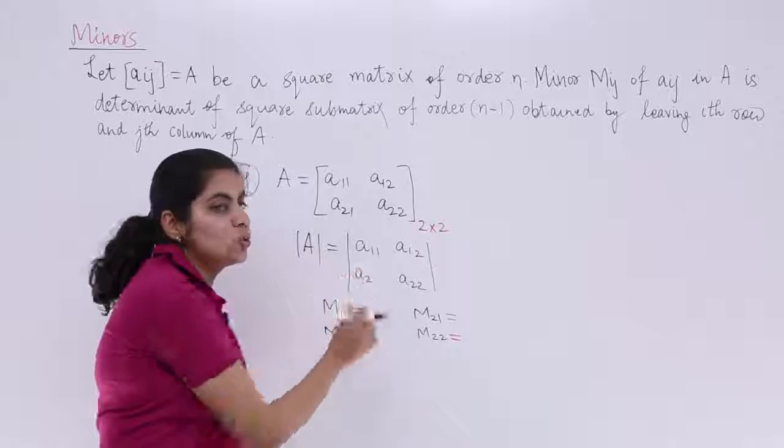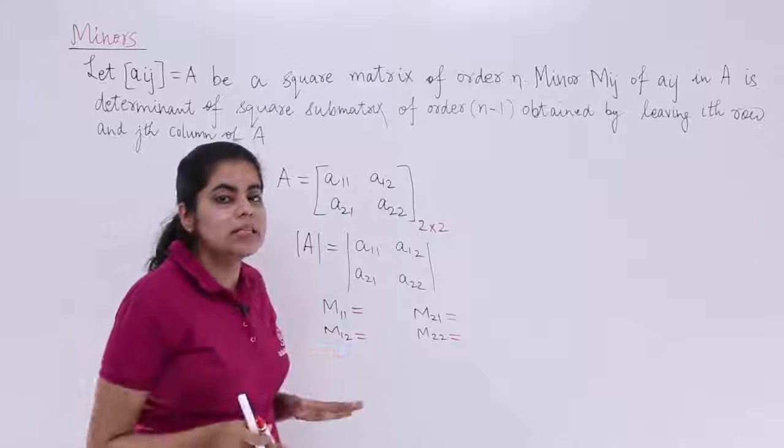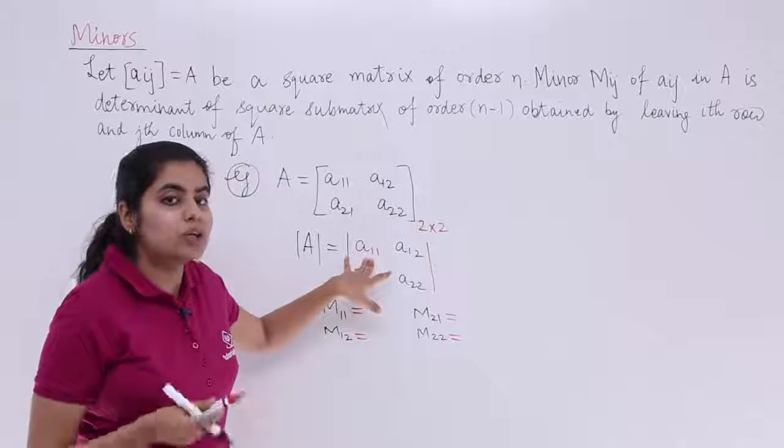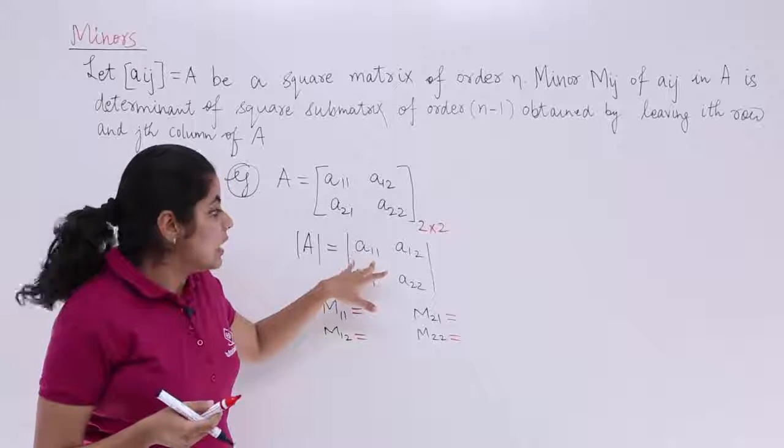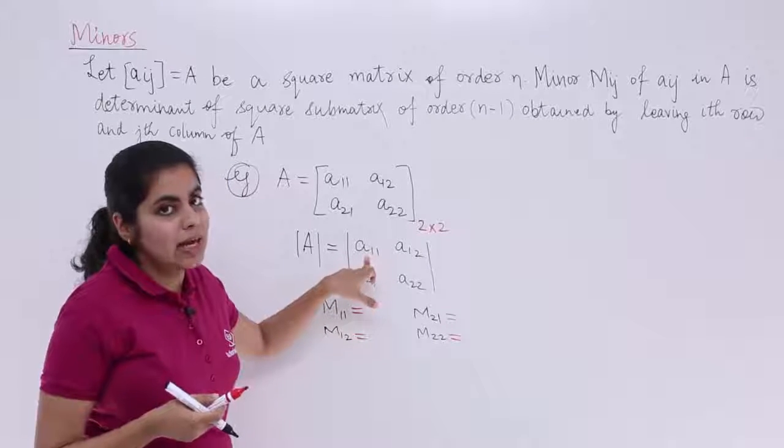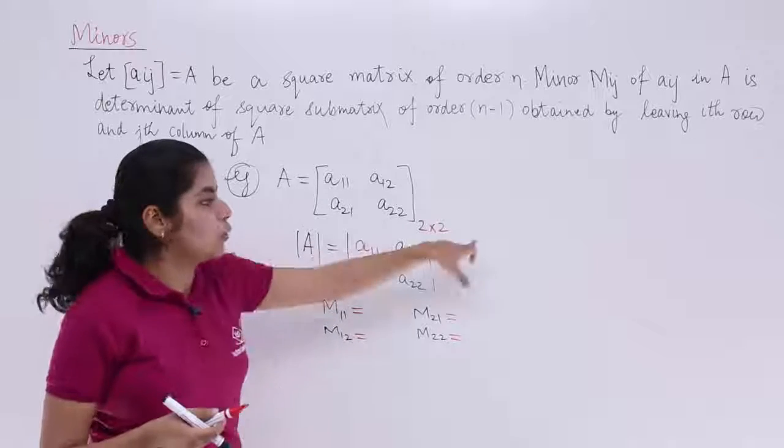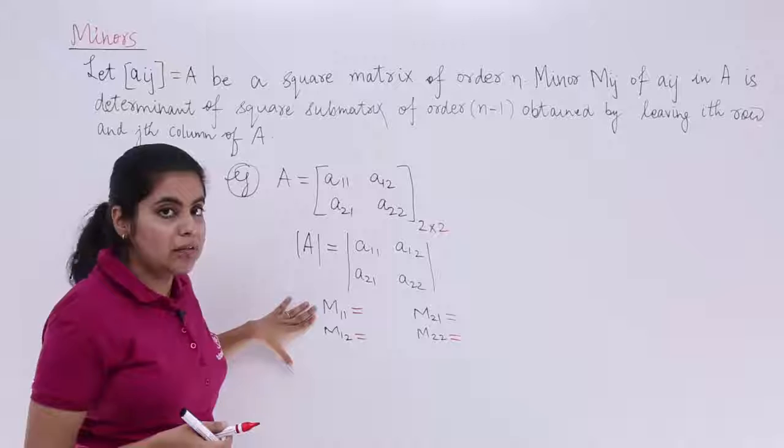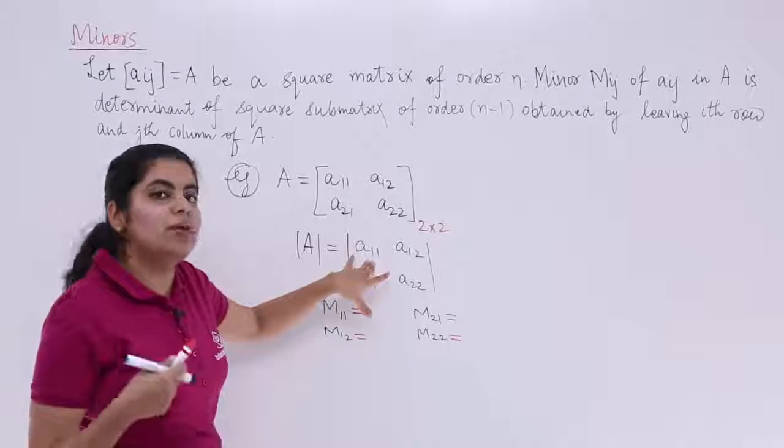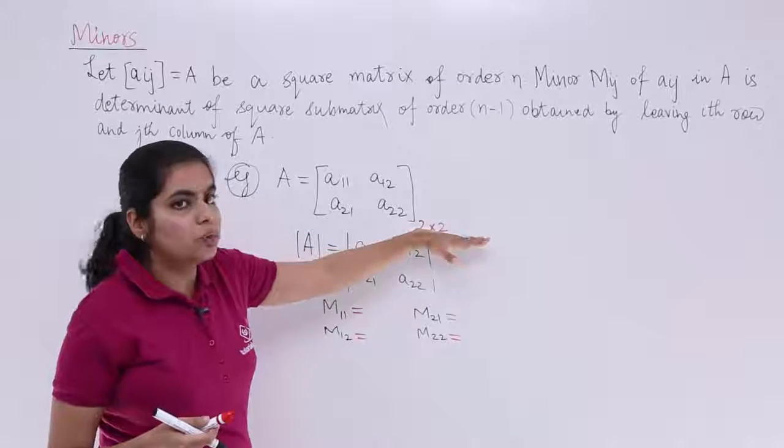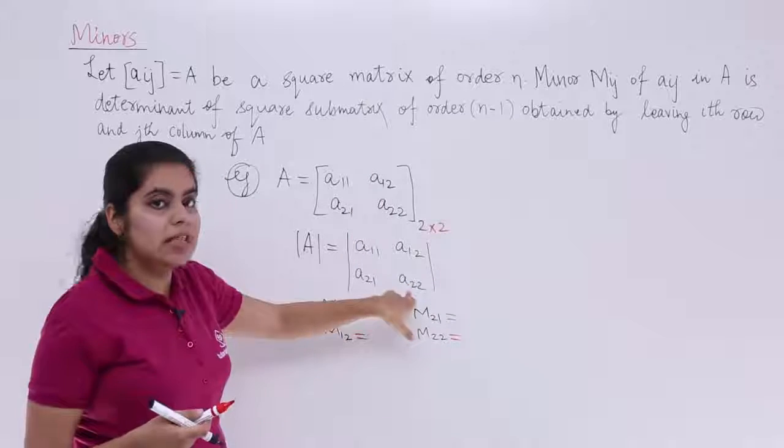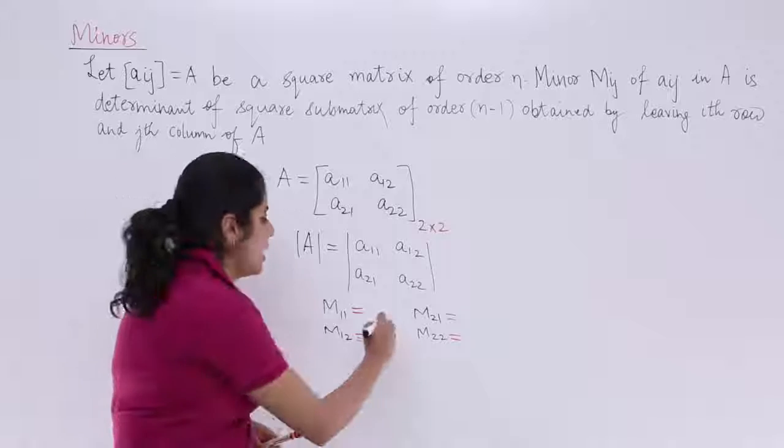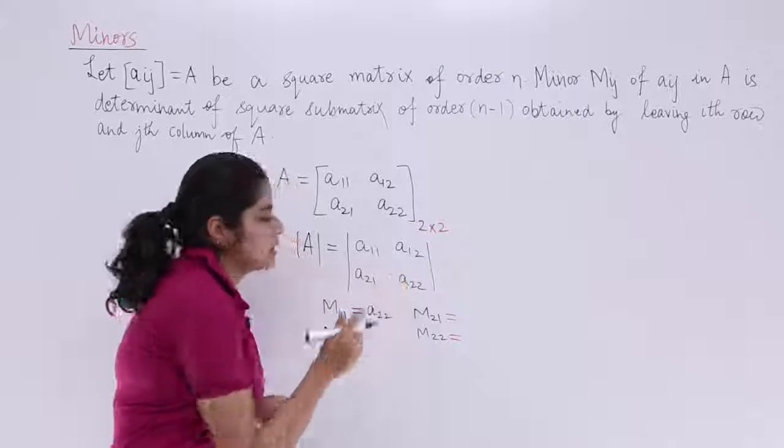We have M11. M11 is related to A11. What is the criteria? Very simple. Whatever element you want to compute minor of, consider that element such that you leave the corresponding row and the corresponding column. So if it is M11, that means you have to compute for A11. You leave this row, you leave this column. What is left? A22. This is the minor of M11.